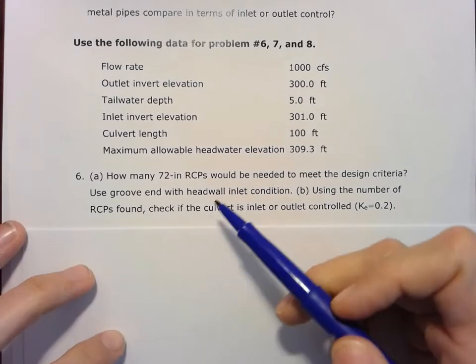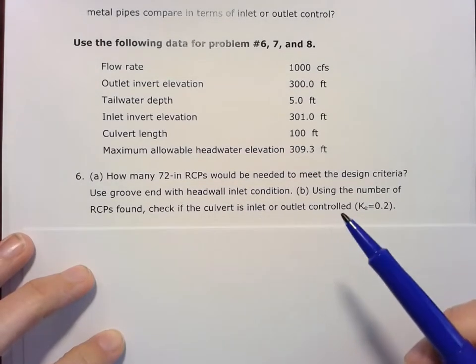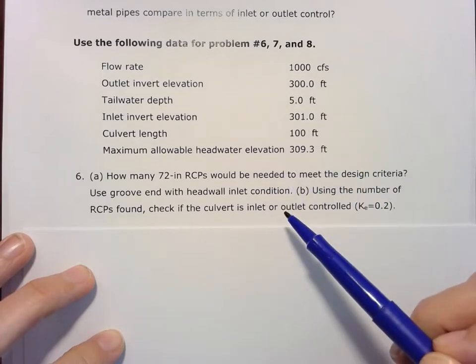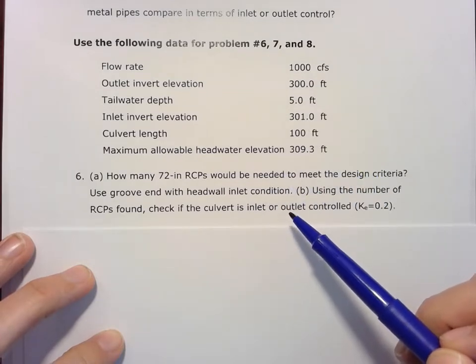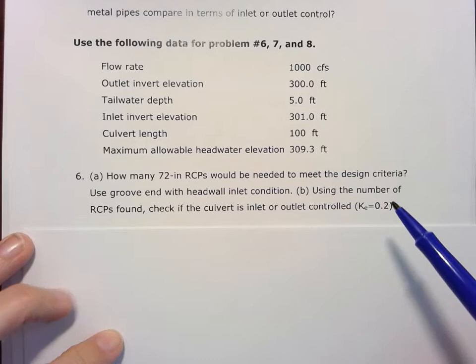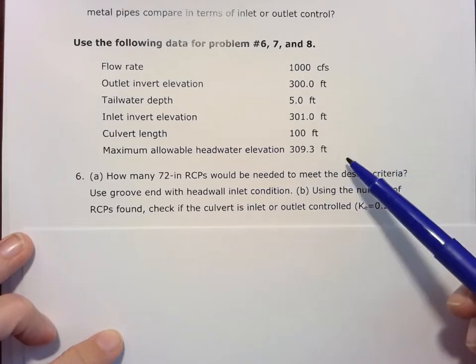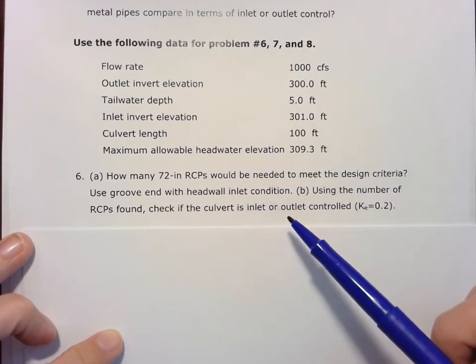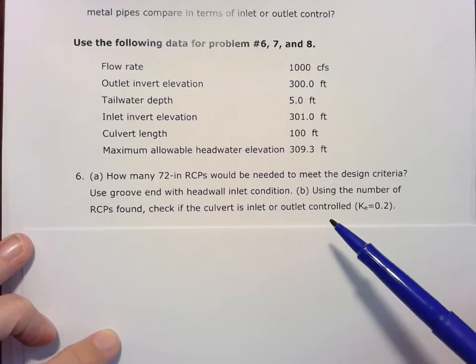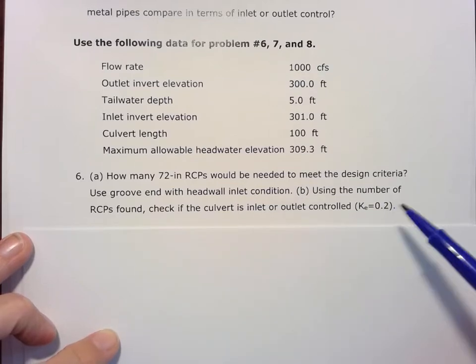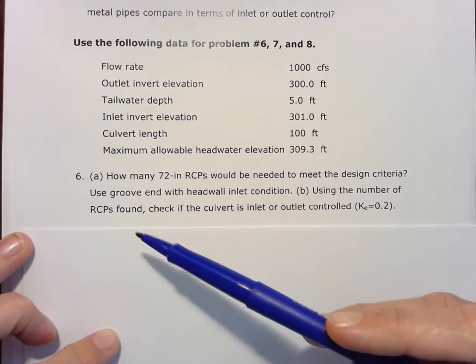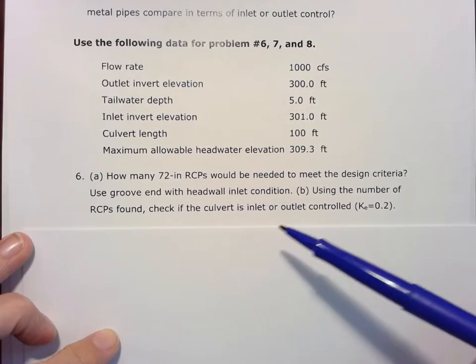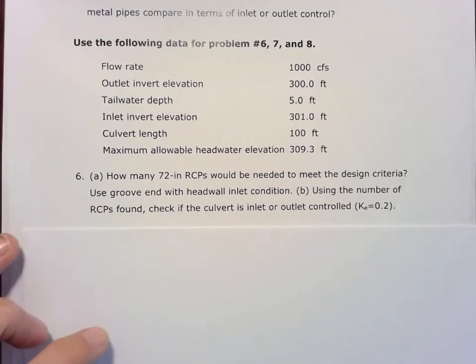Alright, problem six of the chapter five hydraulics homework. We're going to figure out how many 72 inch reinforced concrete pipes would be needed to meet the design criteria above. We're going to use groove end with headwall inlet condition, and then we'll use the number of reinforced concrete pipes found and check if the culvert is an inlet or outlet control.